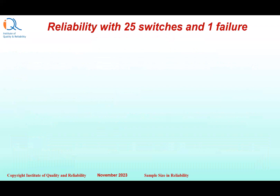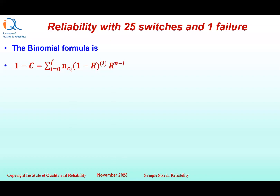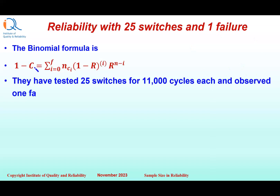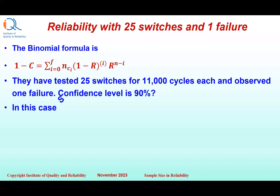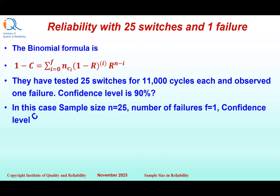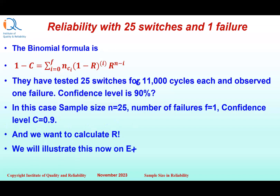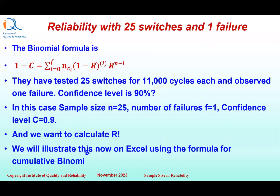Let us solve the first part: reliability with 25 switches and 1 failure. The binomial formula is given by 1 minus C equals the summation from I equals 0 to F of NCI times 1 minus R raised to the power I times R raised to the power N minus I. They tested 25 switches for 11,000 cycles each and observed one failure, with a confidence level of 90%. So sample size N equals 25, number of failures F equals 1, confidence level C equals 0.9, and we want to calculate R.